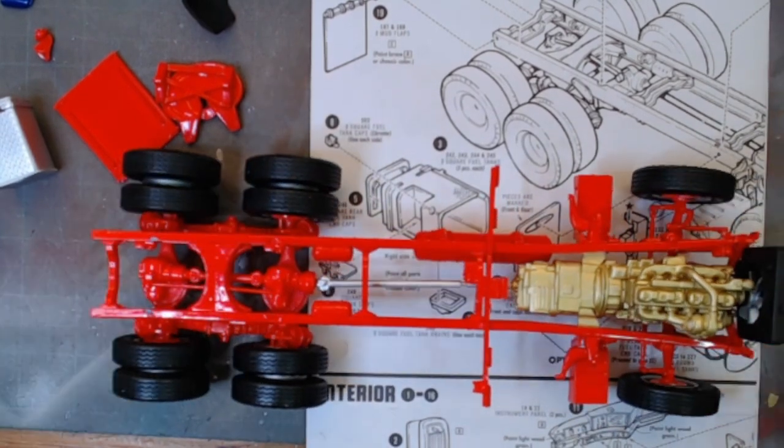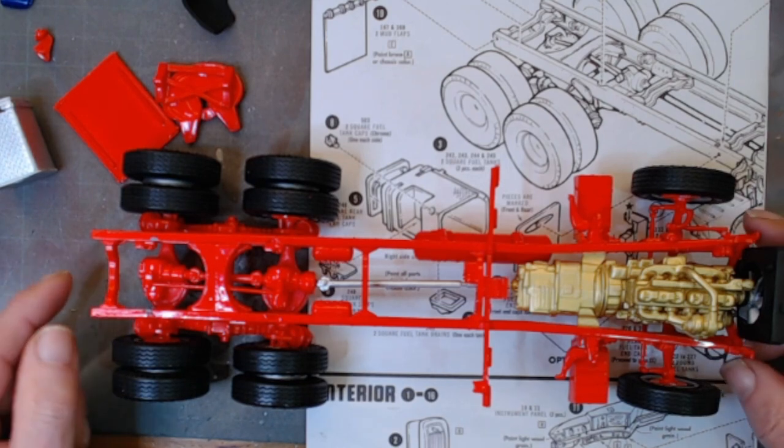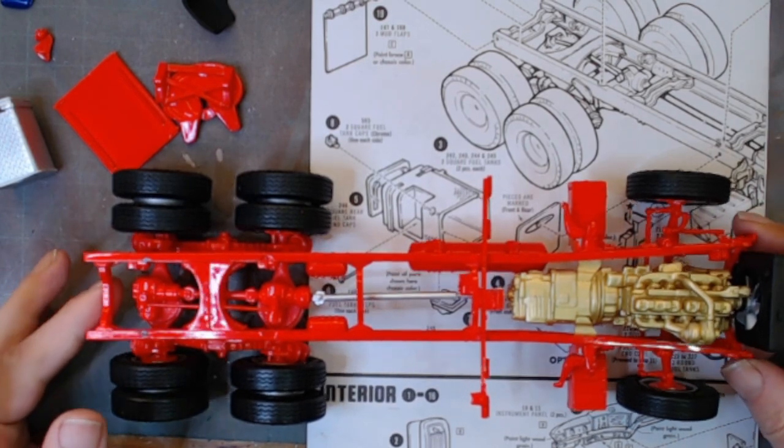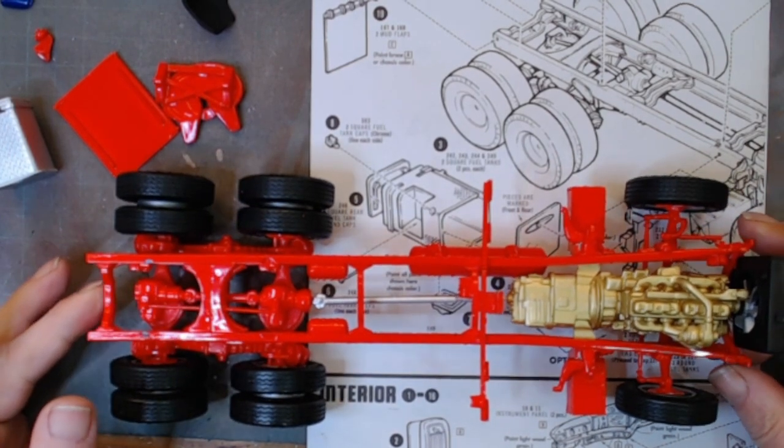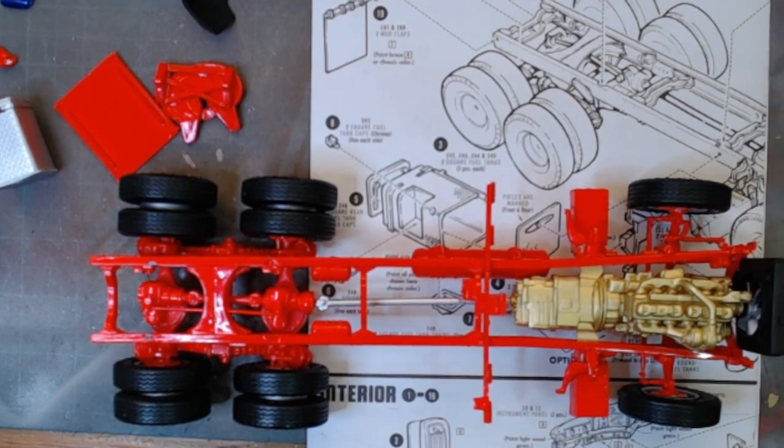It's got the gold colored Maxidine ENDT 675 6C turbocharged diesel engine. Weird color to paint an engine, but apparently all or most Macs before a certain time period, I think it was 1975, were painted in this gold color and after that they were painted in grey.